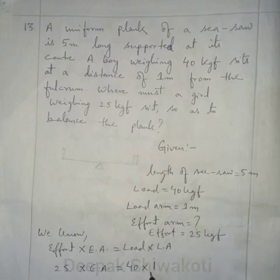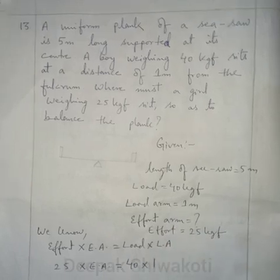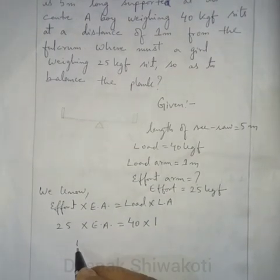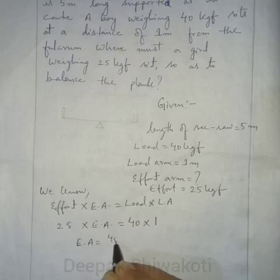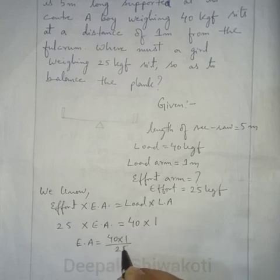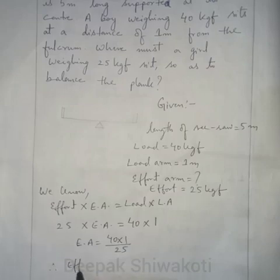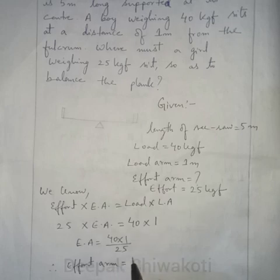Effort is 25 kgf, load is 40 kgf, and load arm is 1 metre. So effort arm = (40 × 1) / 25. When we calculate this, effort arm will be equal to 1.6 metres. That means the girl will sit at a distance of 1.6 metres from the fulcrum to balance the plank.